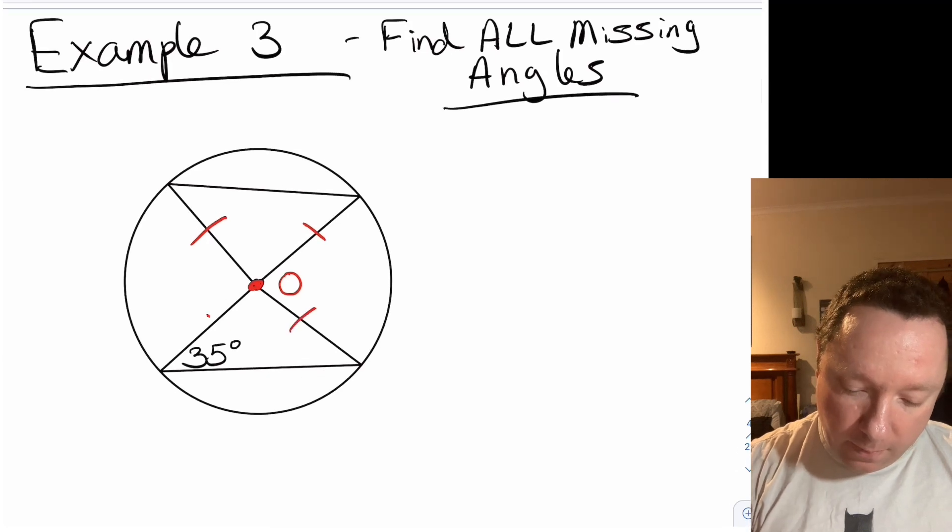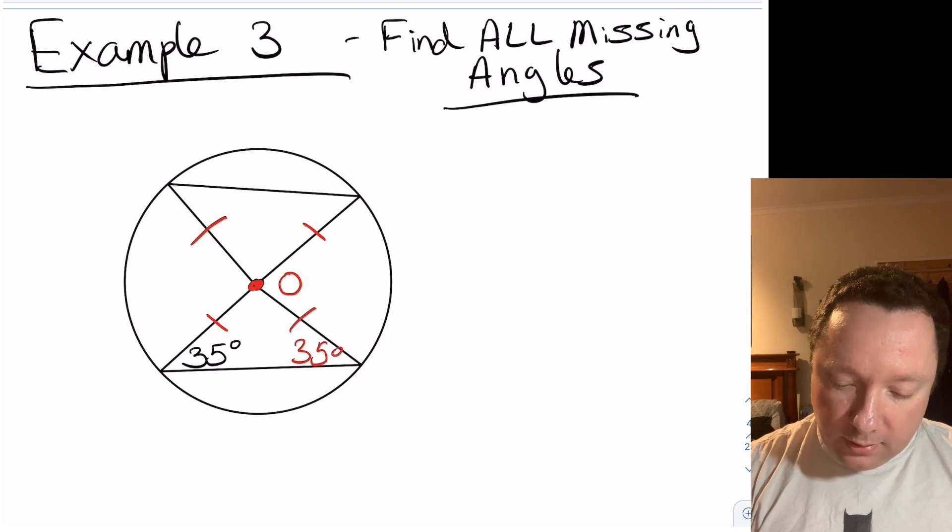So they're the same as well. And then we can start. So we now know that these two angles up here are the same size because you've got an isosceles triangle, and these two angles down here are the same size because you've got an isosceles triangle. So I can just note in 35 degrees. I can work out the missing one here.